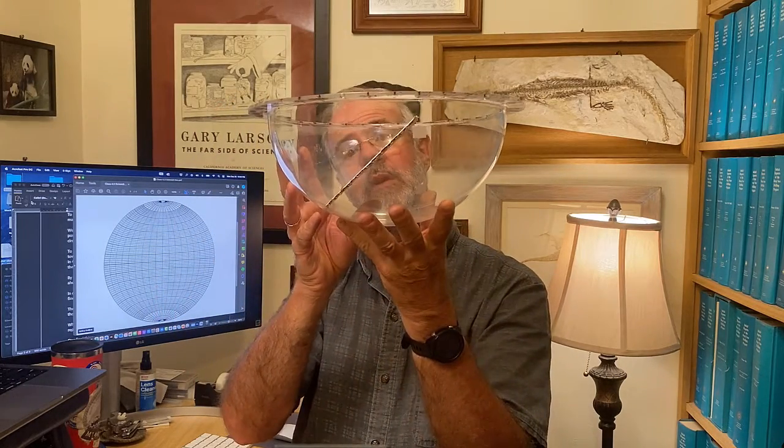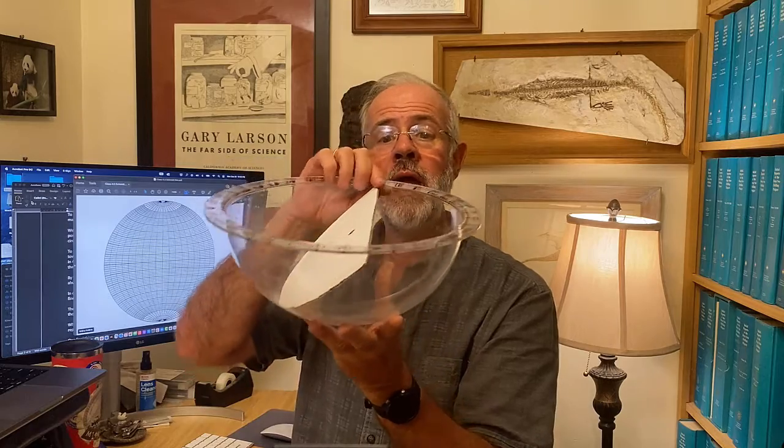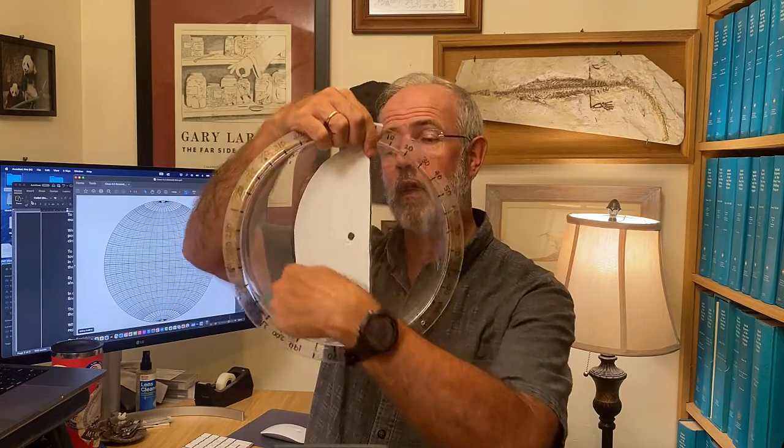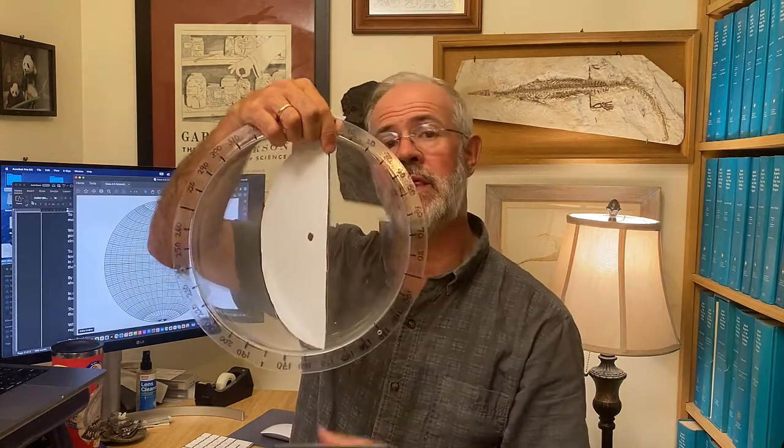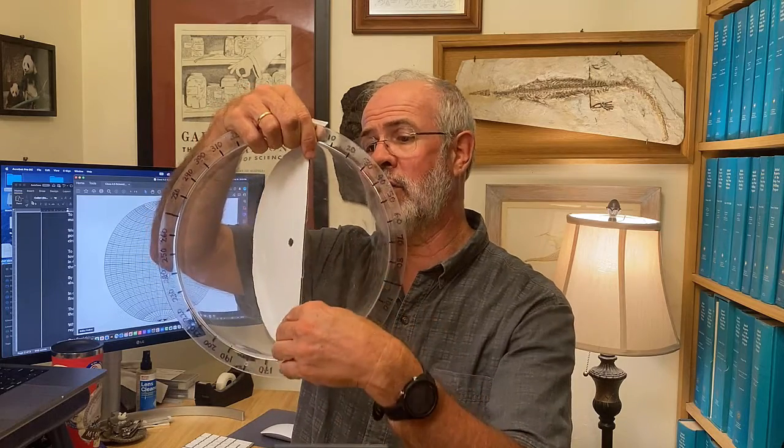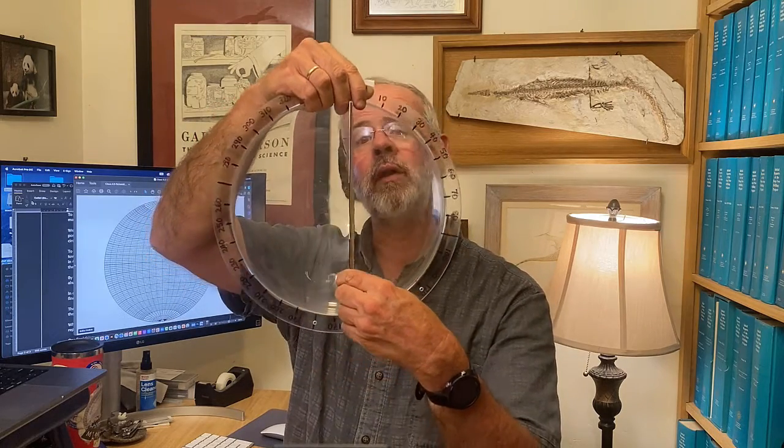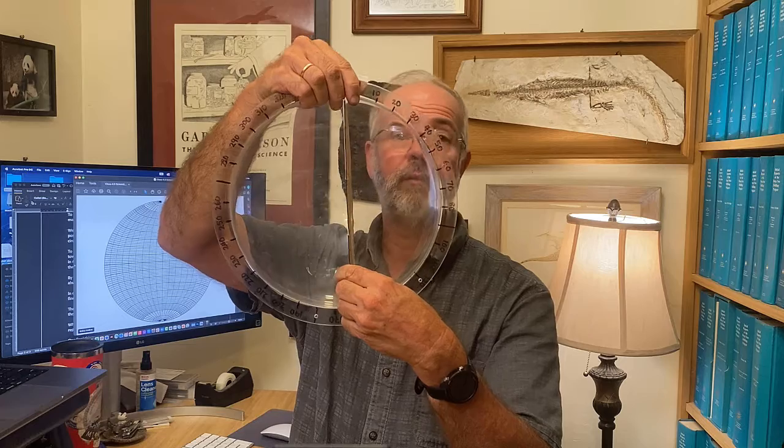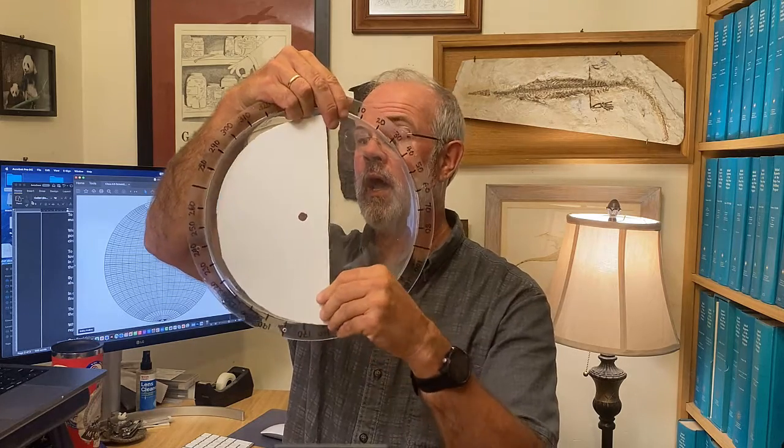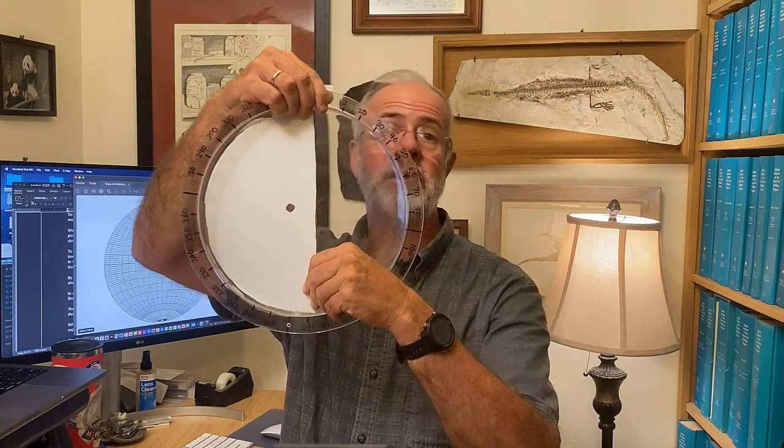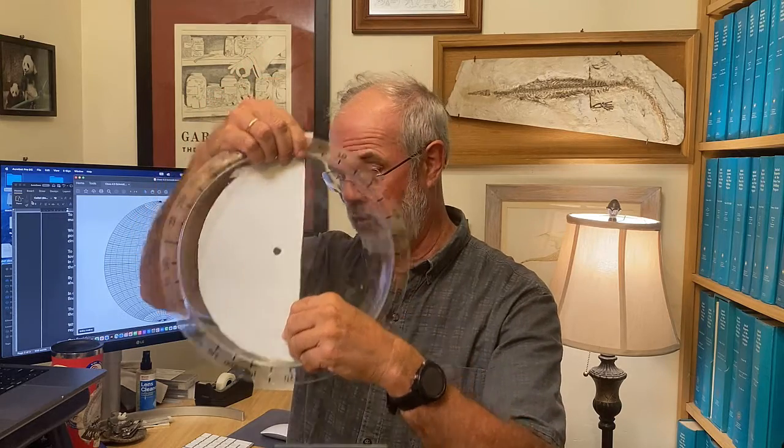And then you can see that the plane is dipping into the bowl maybe around 45 degrees, and as a consequence it defines a curving line in the bottom of the bowl. And that curvature is a lot less when the plane is dipping essentially vertically and it's a lot more when the plane is dipping very shallowly into the bowl.